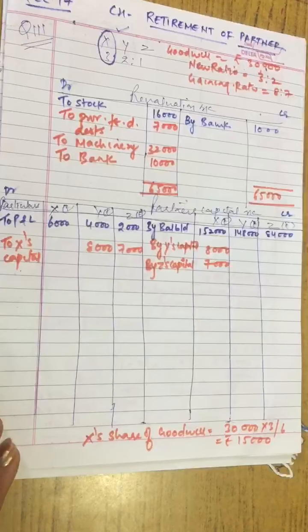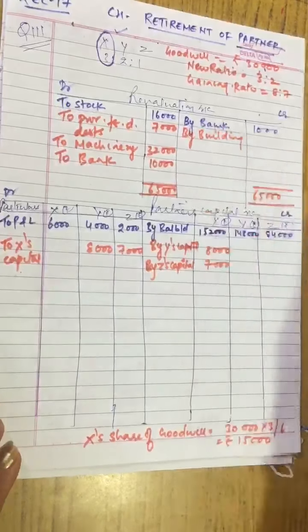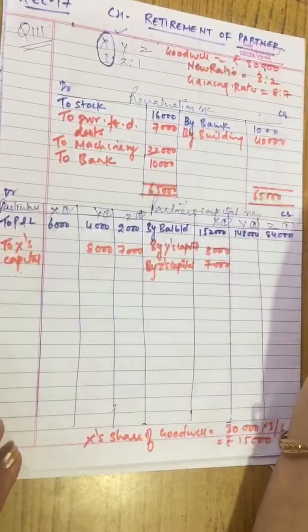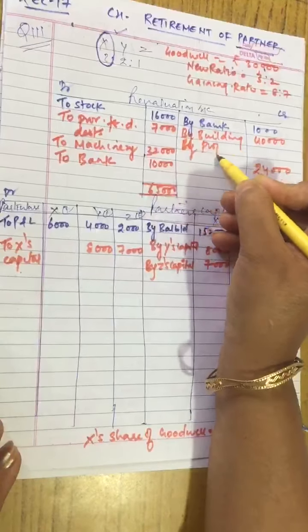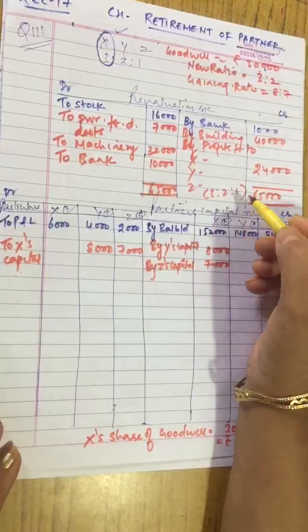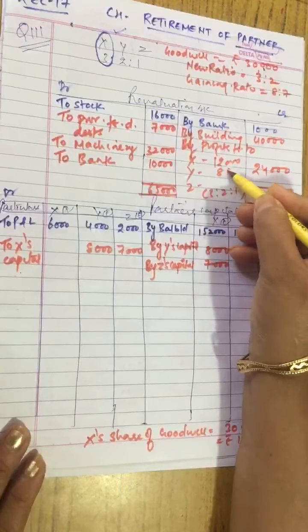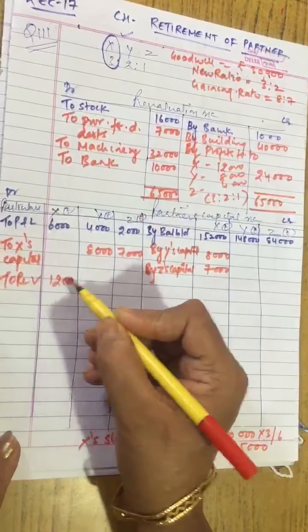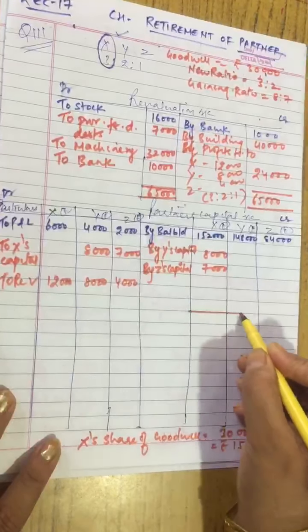There is also 1,000 profit. One thing was remaining: building appreciated by 20%. Building is to be increased by 20%. Building is 2 lakh; 20% of 2 lakh is 40,000 profit. So total profit is 41,000 — wait, net profit is 24,000. Transfer profit to X capital, Y capital and Z capital in 3:2:1 ratio. Dividing 24,000 by 6 gives shares of 12,000, 8,000 and 4,000.